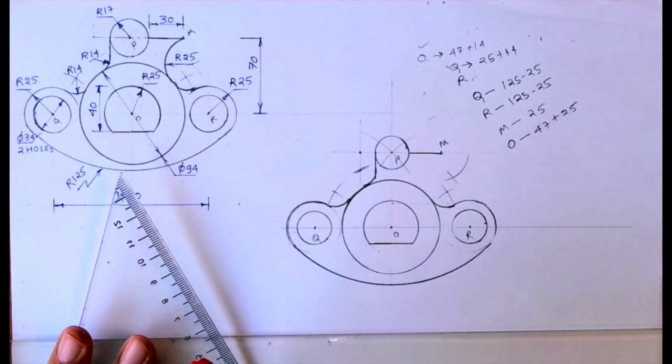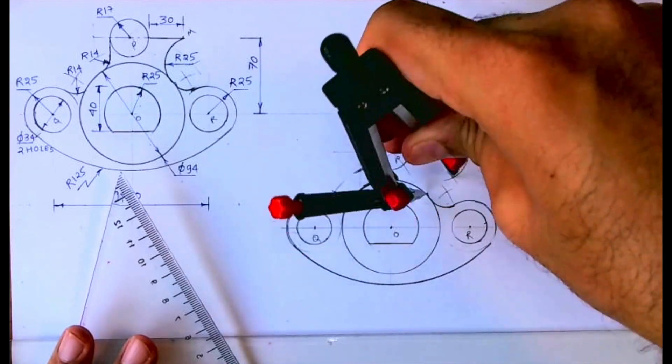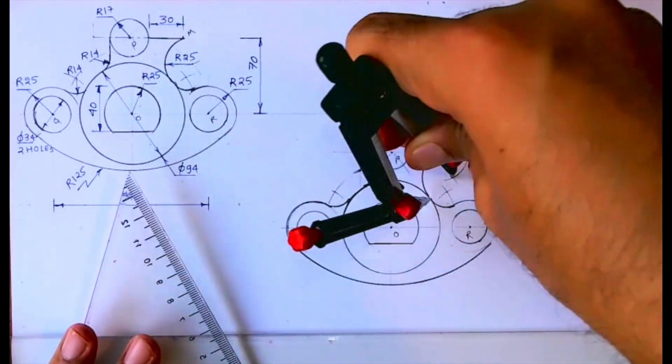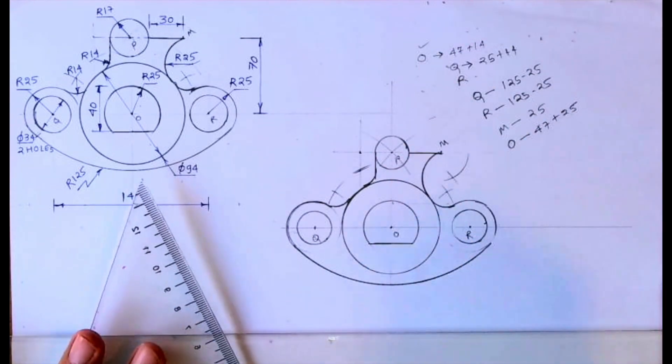See this. So from here we can draw radius 25. So by doing this we have completed this sum. This was 2022 technical drawing application paper, sem 1 paper. So I hope you people have understood this. Thank you.